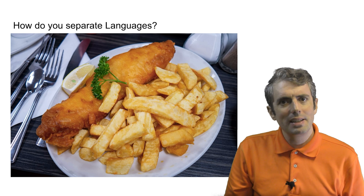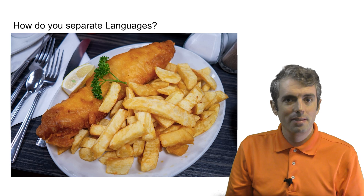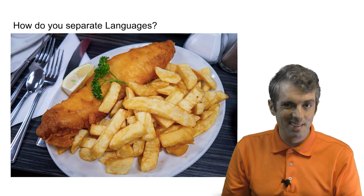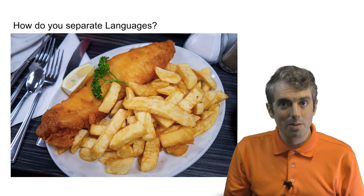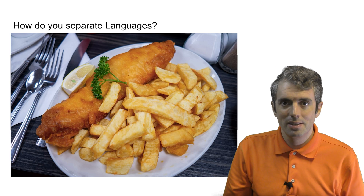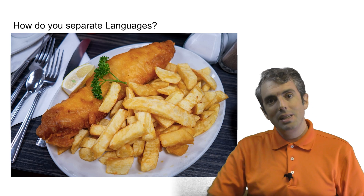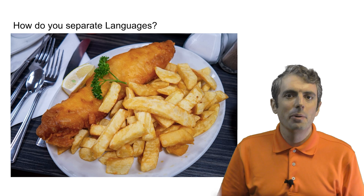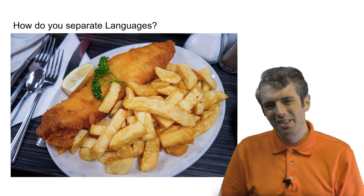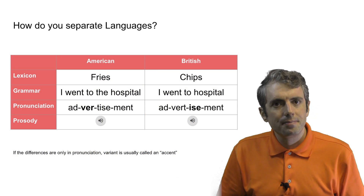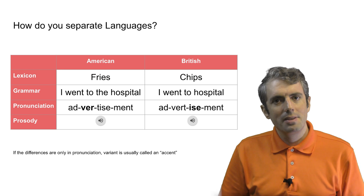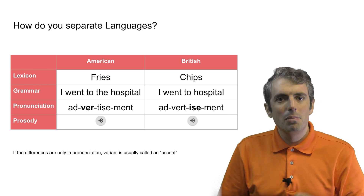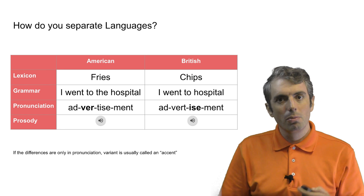Let's dig into what makes the language spoken in England different from American English. These same aspects will allow you to compare different languages that are really different. One dimension where you might compare different languages is the words that they use — this is called the vocabulary or the lexicon. For example, the dish behind me in London is called fish and chips, even though the fried potatoes next to the fish are clearly what an American would call French fries — but they're probably a Belgian invention. Beyond what words we use, how we put words together is different. For example, British English doesn't use the determiner 'the' before words like 'hospital.'